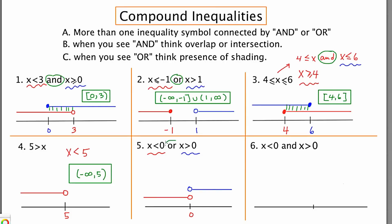Because of the connector OR, I look for the presence of any shading. There's shading to the left with the red. There's shading to the right with the blue. However, right here there's nothing going on. 0 is never part of the solution. So basically it's any answer except for 0. To write this with interval notation, we say negative infinity to 0, union 0 to infinity.